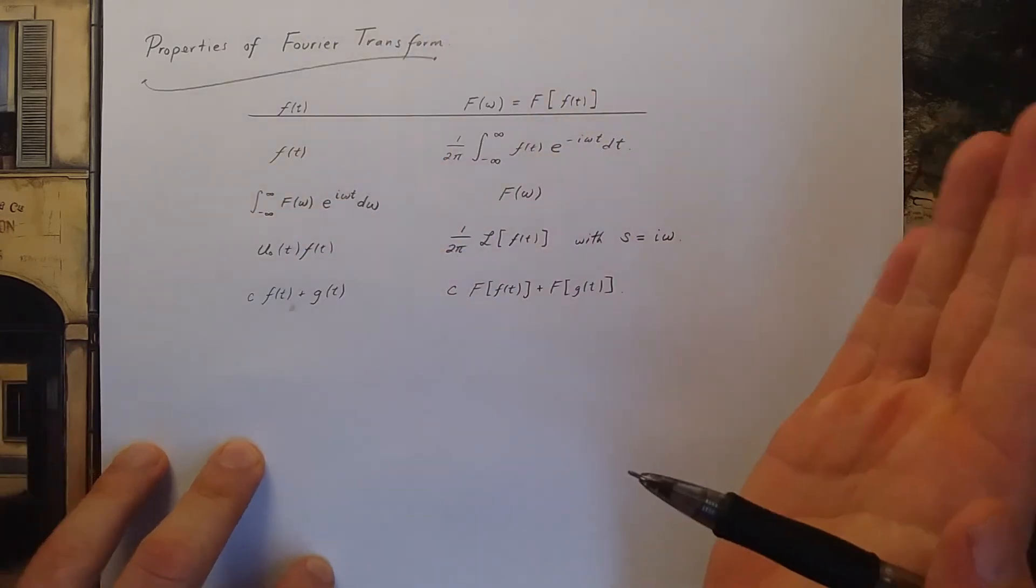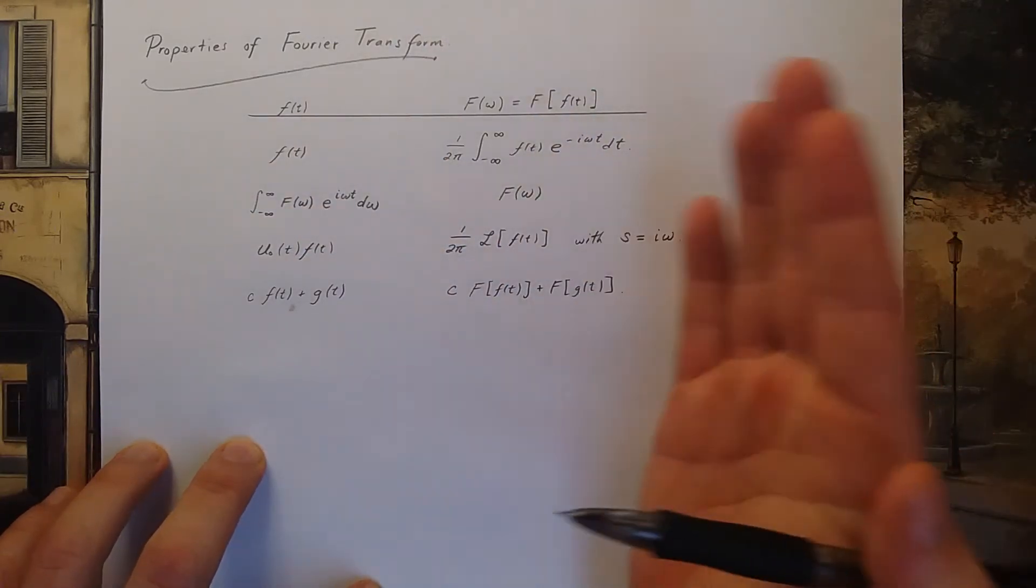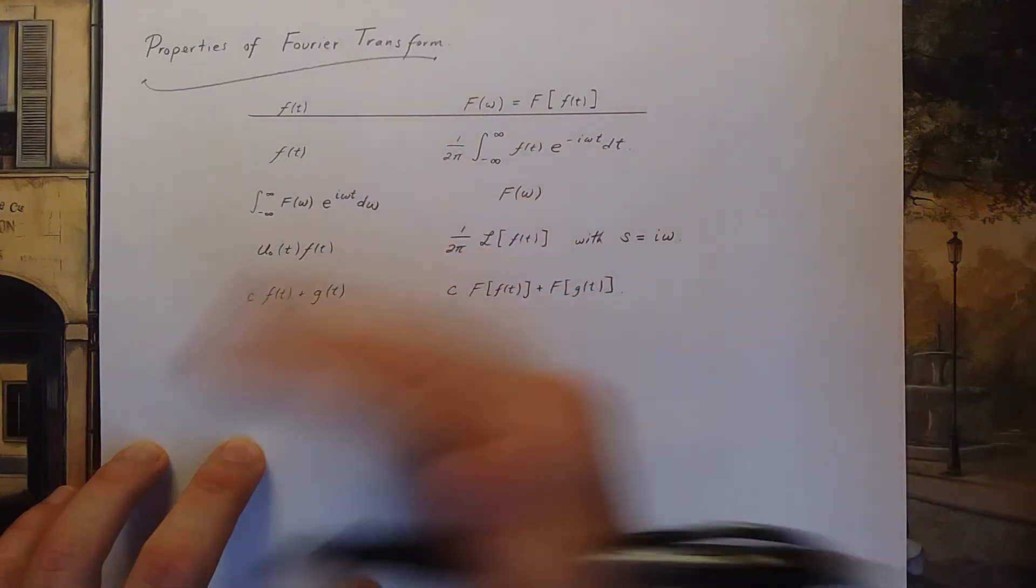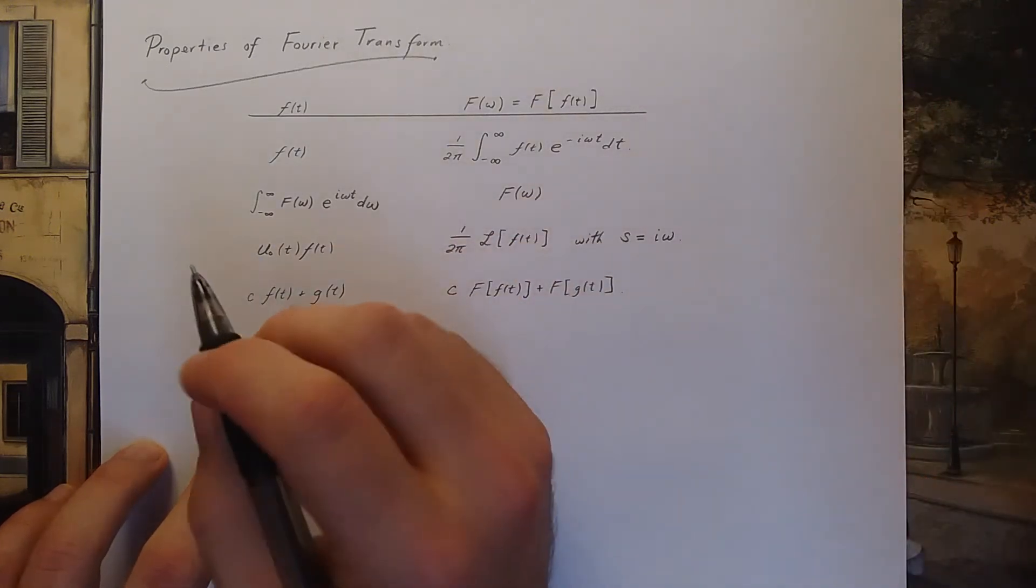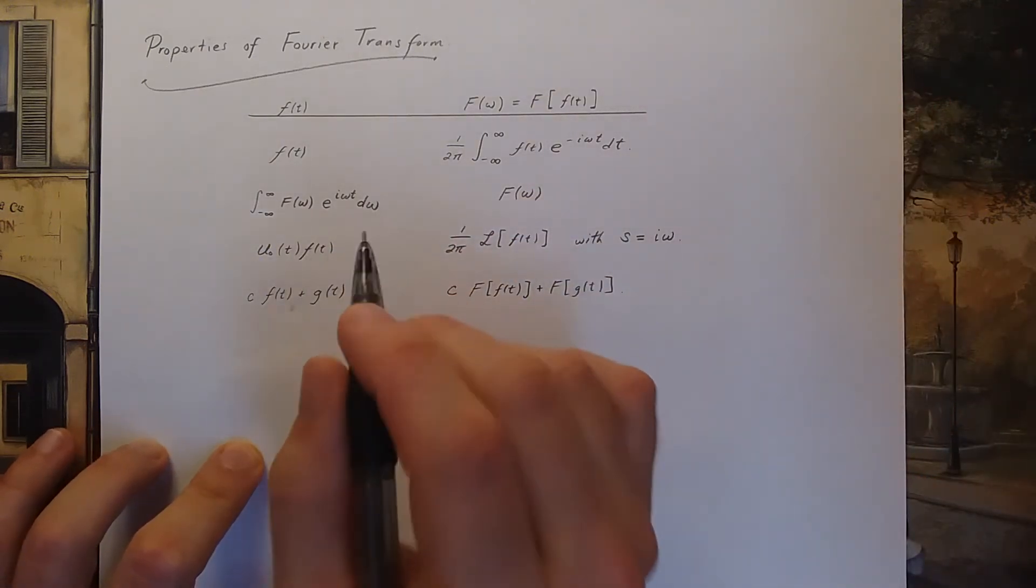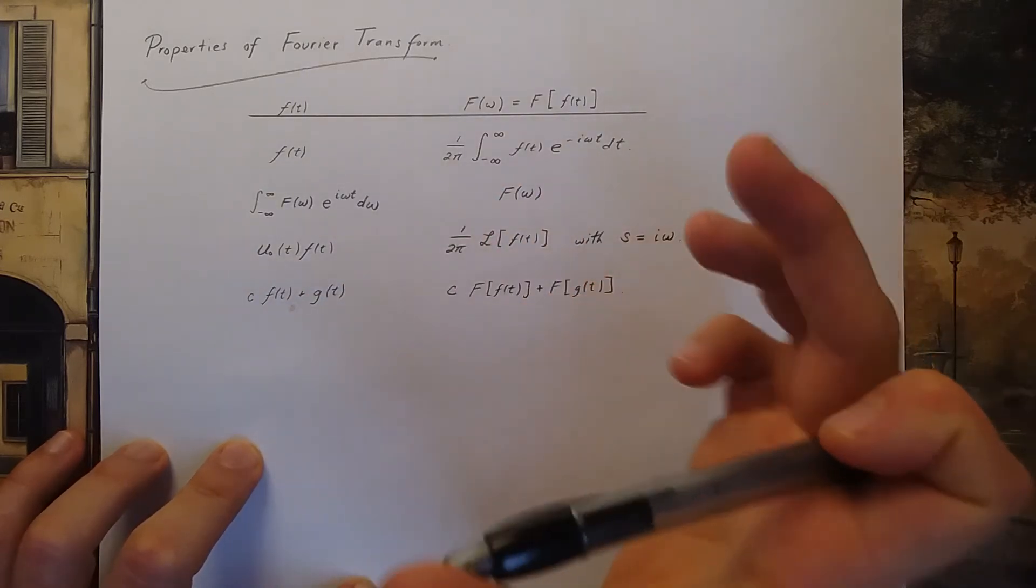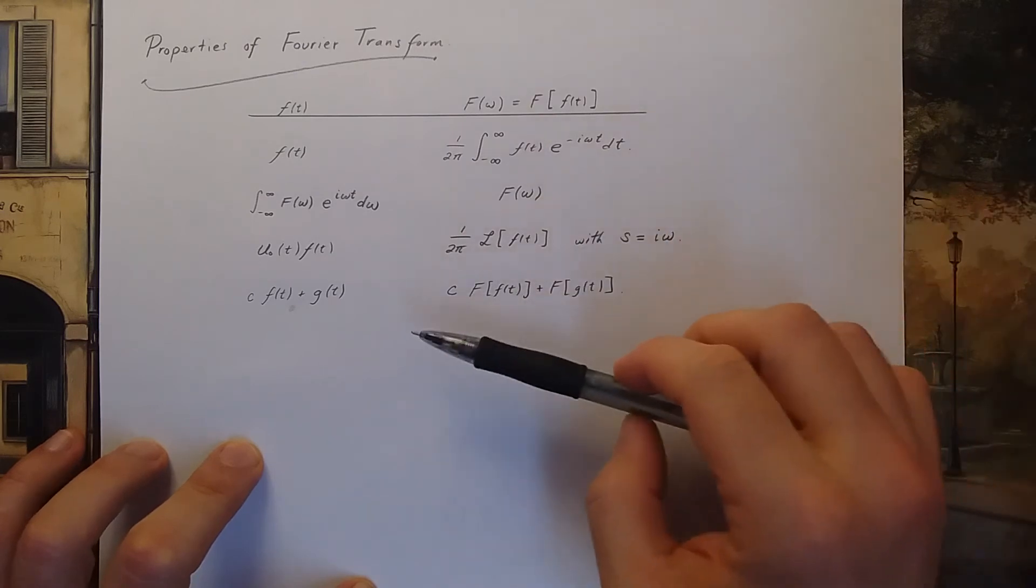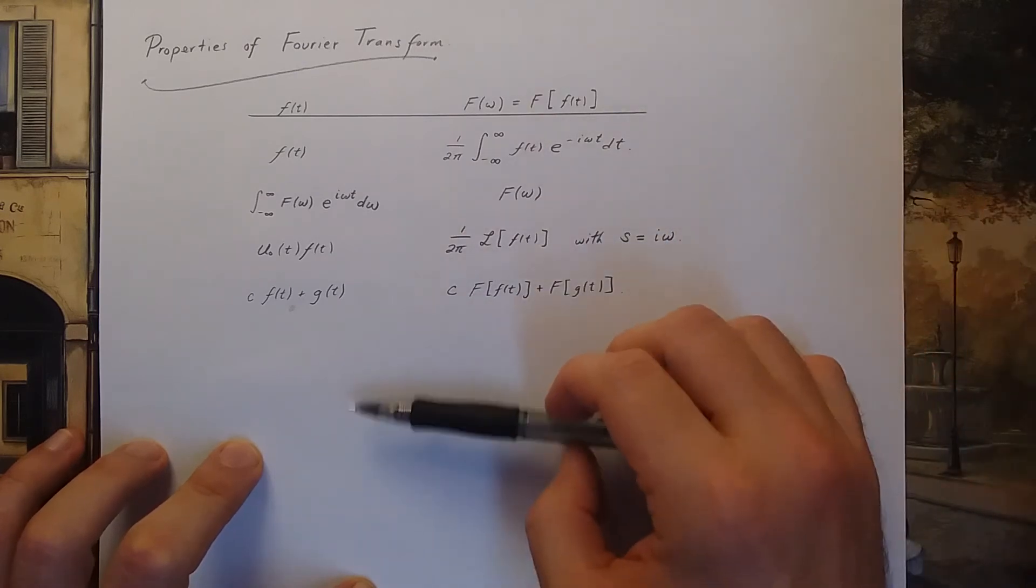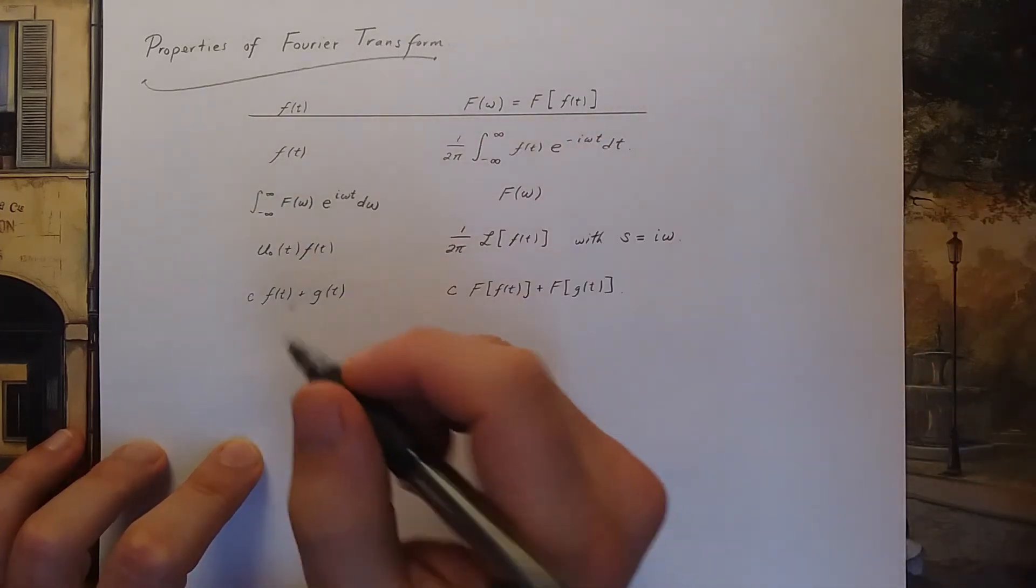Then there's shifting theorems like shifting theorem number one analog, shifting theorem number two. I'm gonna leave those for you to look up on the table of Fourier transforms on our website. But to end this video I'd like to highlight two more important Fourier transforms, that of derivatives.